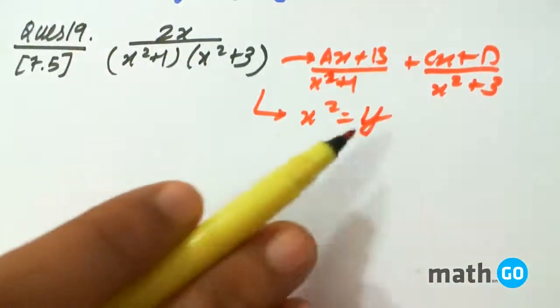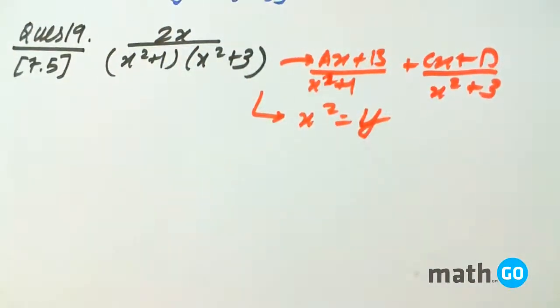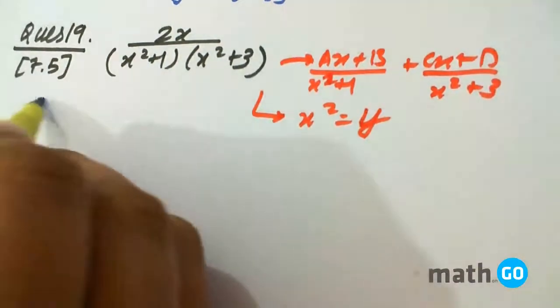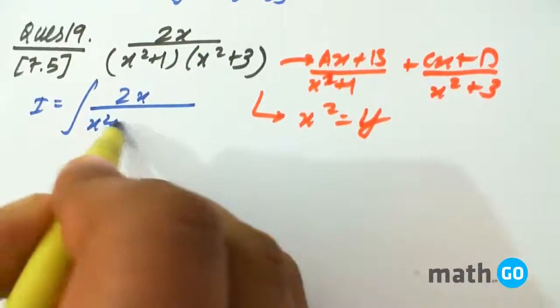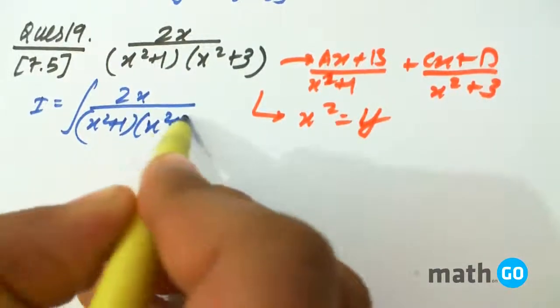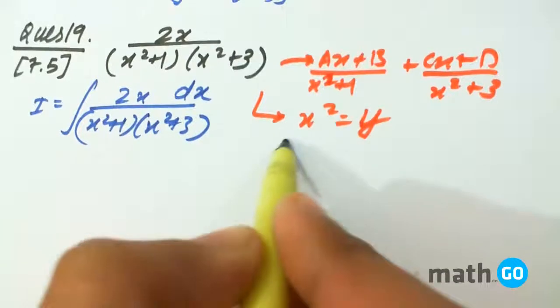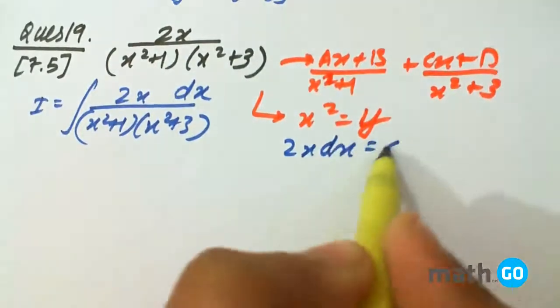But if we keep x square equals to y, then see what happens. We have i equals to integral of 2x upon x square plus 1 times x square plus 3 dx. So 2x dx equals to dy.